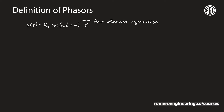Now, if we want to represent this in the phasor domain, we would rewrite this waveform as V phasor, which is going to be equal to Vm at an angle of theta, and this is going to be in volts. Notice that the frequency or angular frequency omega is not given in this second expression, which is in phasor domain form — this is the phasor domain expression.